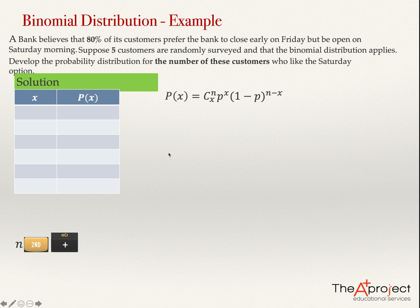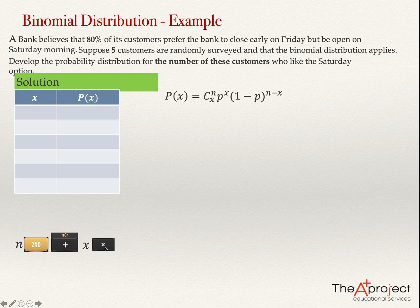After entering the combination, I multiply by the probability raised to the power X. Because I'm using a financial calculator, I put this inside a bracket. So I open a bracket, type P — the probability in each trial, which in this problem is 0.8 — then raise it to the power X.